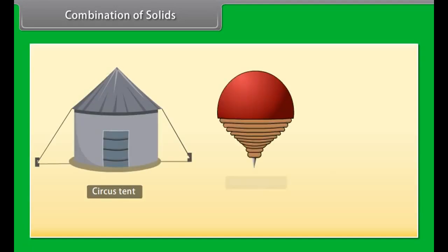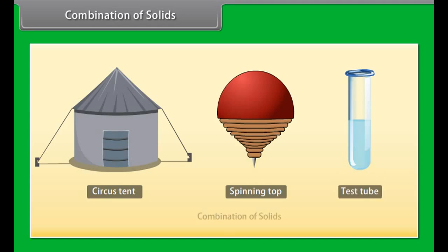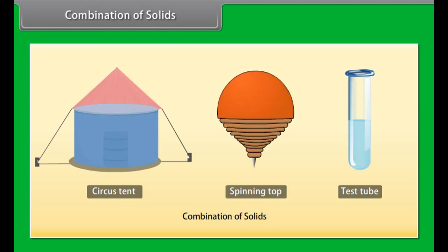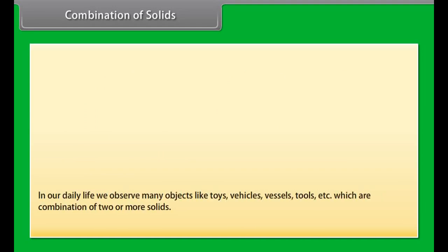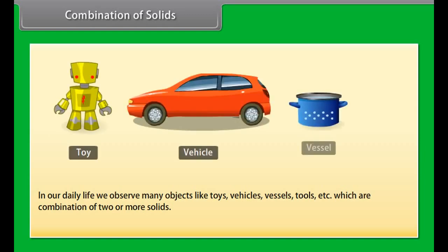Students, look at these solids. These solids are made up of two or more solids. A circus tent is a combination of a cone and a cylinder. A spinning top is a combination of a hemisphere and a cone. And a test tube is a combination of a hemisphere and a cylinder. In the same way, in our daily life we observe many objects like toys, vehicles, vessels, tools, etc., which are a combination of two or more solids. Let's learn to find their surface areas and volumes.